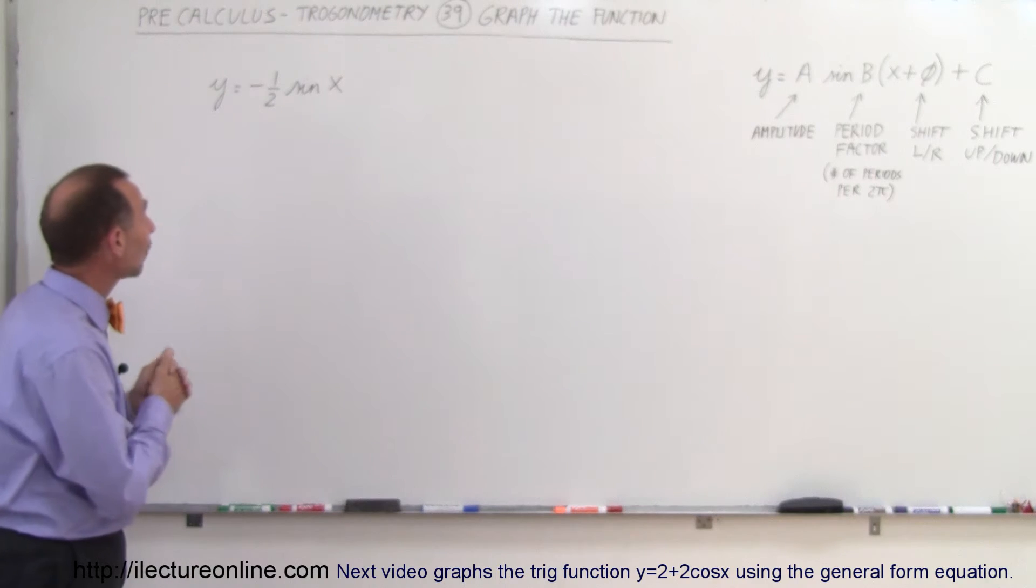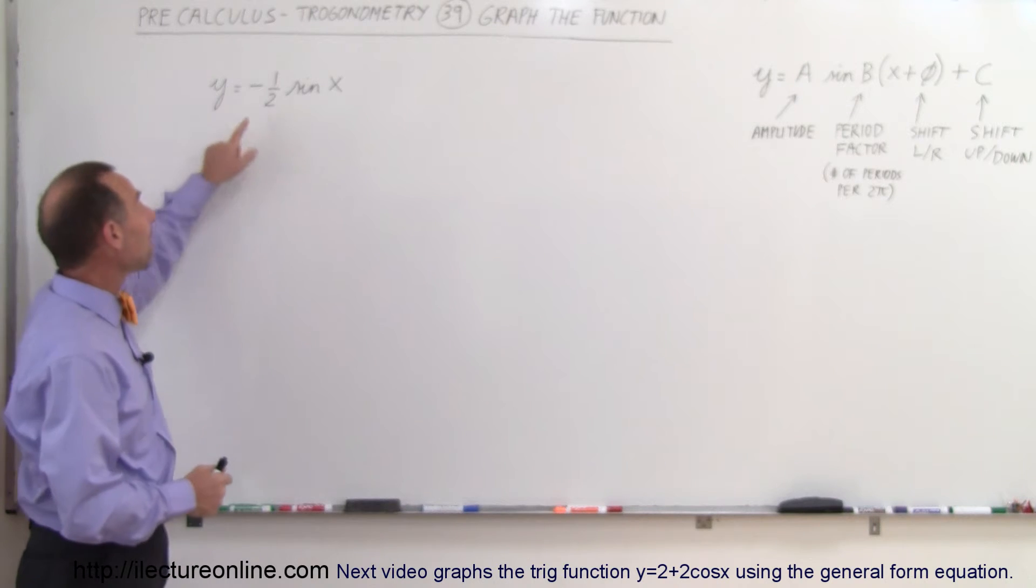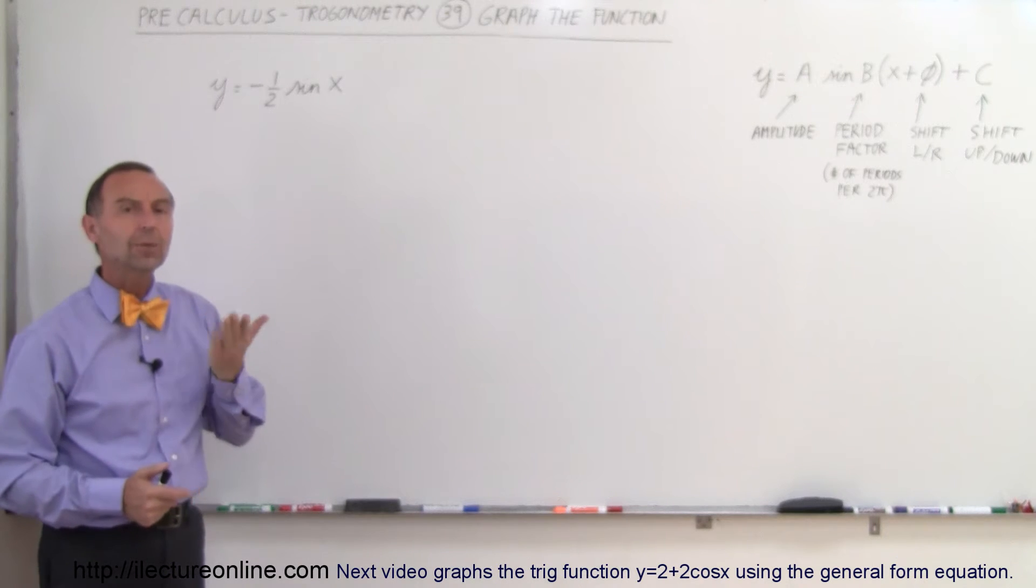Starting with something that looks like this: y equals minus one-half sine of x. The reason why I threw this one in is because there's a minus in there, so how do we deal with the minus?